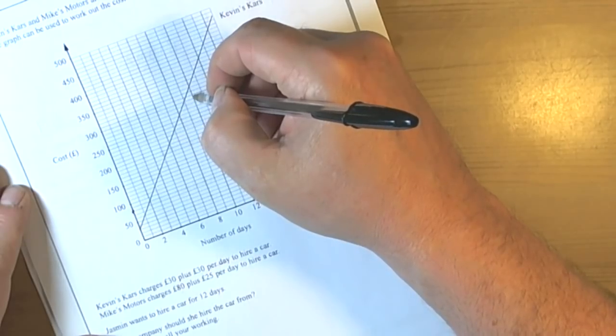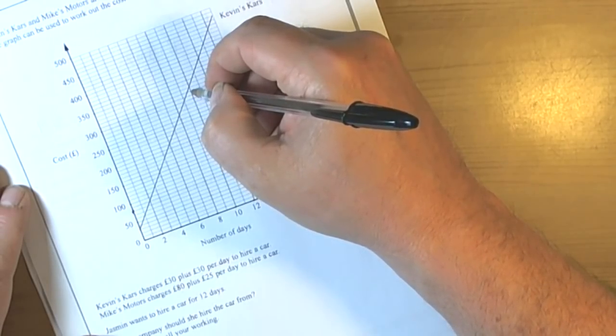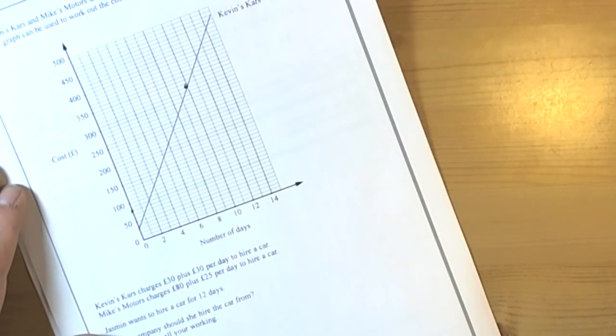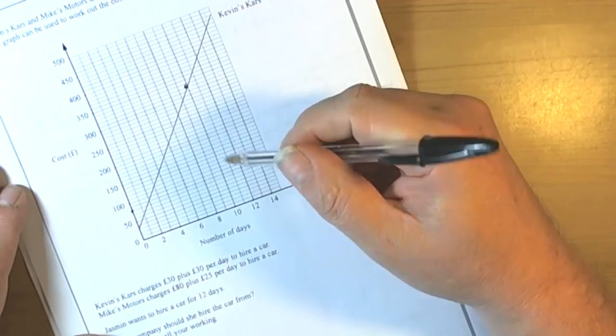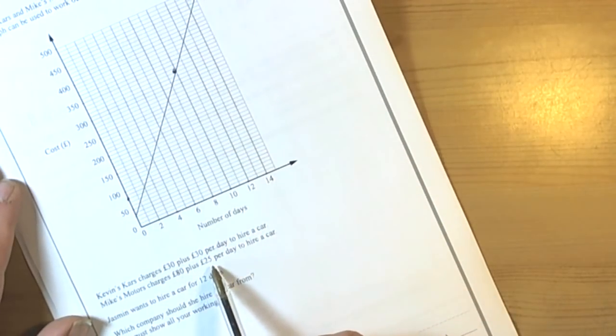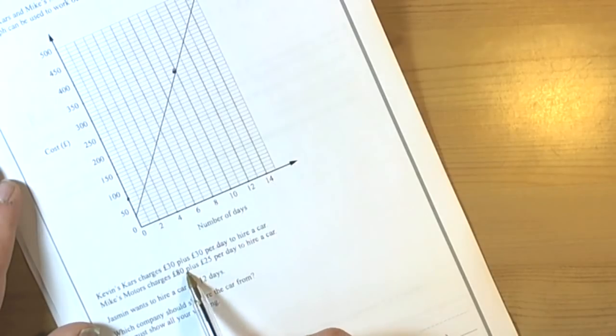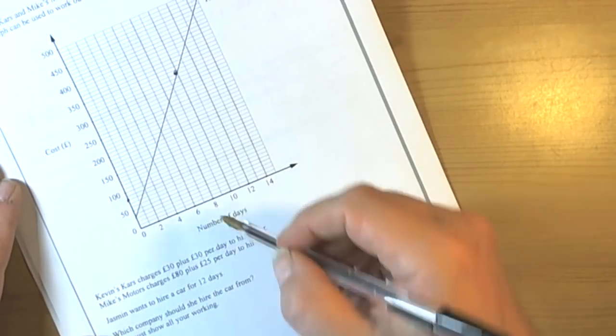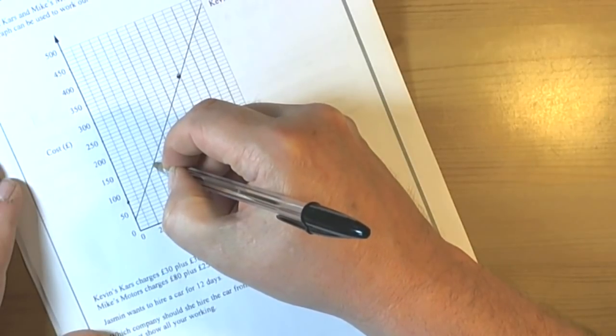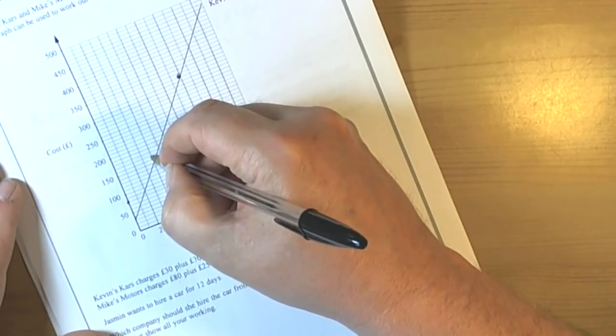So we've got £300, £310, £320, £330. If I then work out another one just so I can line my ruler up carefully—if I do it for 4 days, 4 times £25 is £100 plus the £80 standard charge, so that will be £180. So £150, £160, £170, £180.